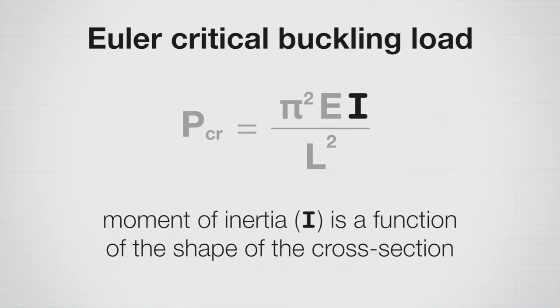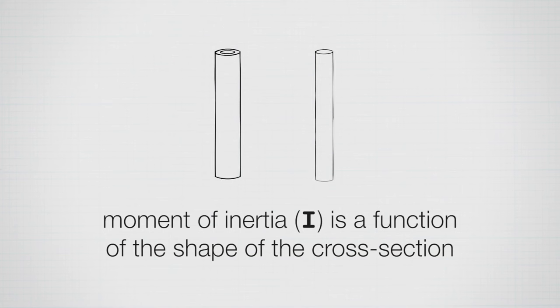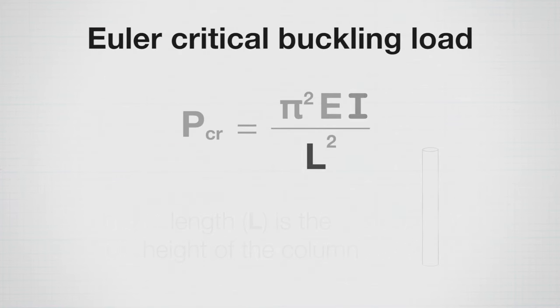Moment of inertia, or I in that equation, is a property of the section type. So it'll be the section shape really is what the moment of inertia is a function of. We'll discuss moment of inertia more when we discuss bending. For now, it's fine to just understand that there's a relationship between shape and the moment of inertia. As an example, a hollow tube will have a much higher moment of inertia than a solid tube with the same cross-sectional area. Thus, the hollow tube will be able to support much more load before it buckles. And then L is the length of the height of the column.